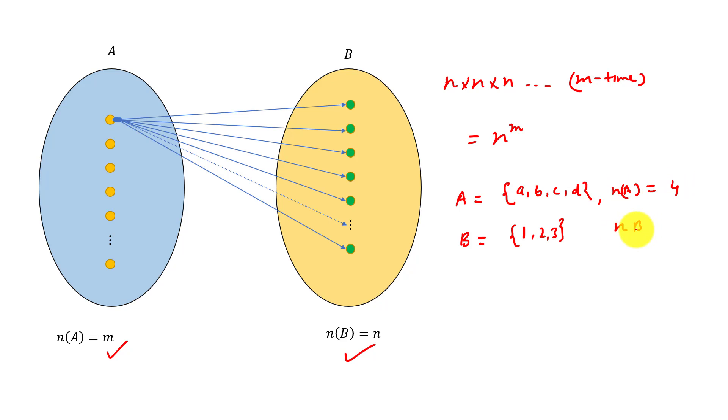The total number of functions defined from set A to B is equal to 3 to the fourth, that is 81.